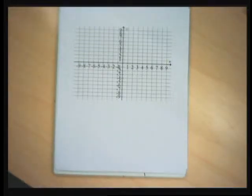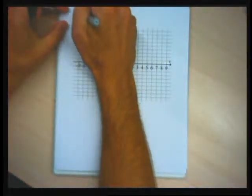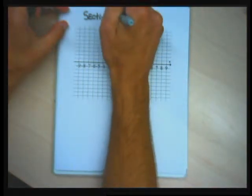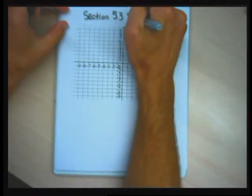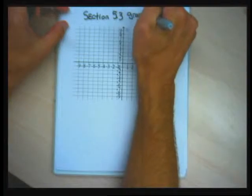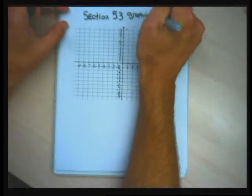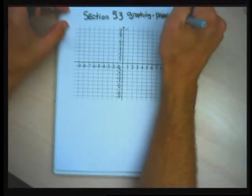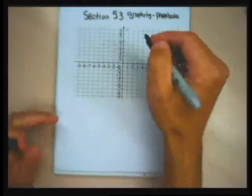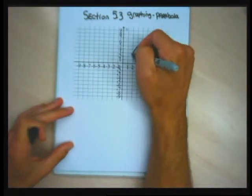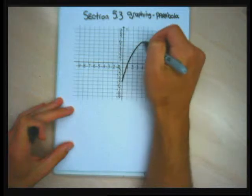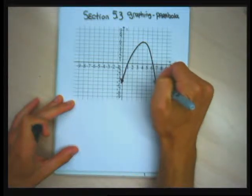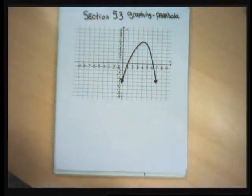I'm about to talk about section 5.3. In section 5.3, every single problem is a graphing problem. The shape of every graph is going to be a U — it either opens up or downwards. The shape is called a parabola. This might be typical of a graph we'd produce when doing one of the problems in this section, so we're going to graph U's essentially.